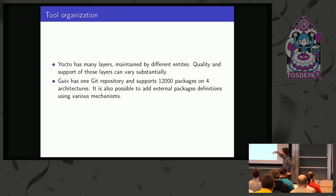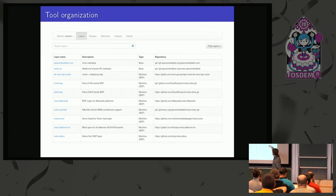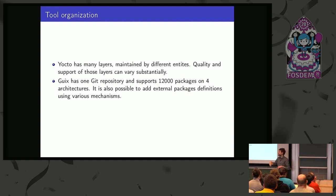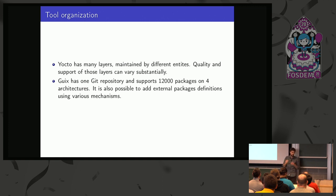Yocto and Guix have a different organization. Yocto has many layers maintained by different entities — some are official OpenEmbedded layers with good support, and some are quite unofficial, like the one I used for this board. The quality can vary a lot. Guix has a different approach: we have only one Git repository with every package and every board supported. While you can add extra repositories with extra recipes, it's not the recommended way. Adding some patches is just one patch to one Git repository — everyone can do that, it's very simple.